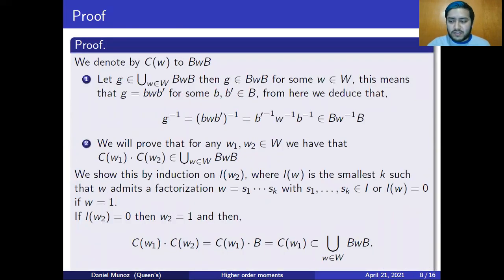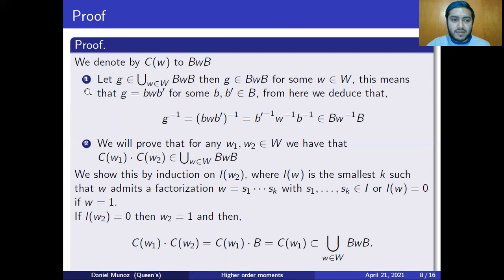Now I will provide a sketch of the proof of the Bruhat decomposition theorem in the general statement. I'm going to denote by C(W) the double coset BWB, and I want to prove that the union of the double cosets is actually a group. I need to prove that it is closed under taking inverses and also closed under multiplication. I take g, an element in the union of the double cosets, which means g belongs to some double coset BWB for some W in the Weyl group. This means g can be written as b W b', where b and b' are elements in B.